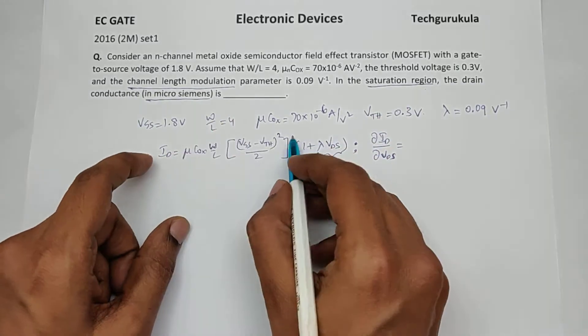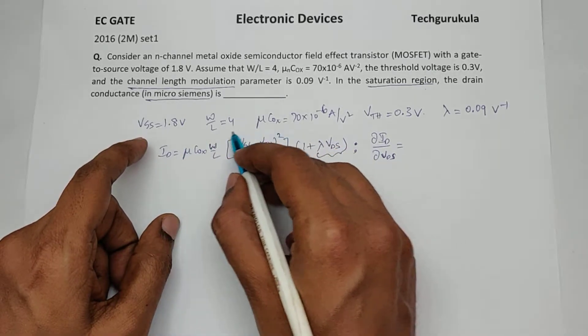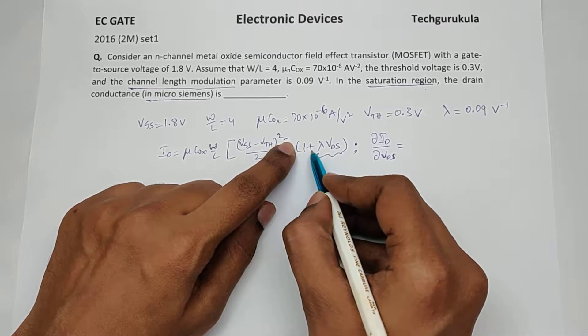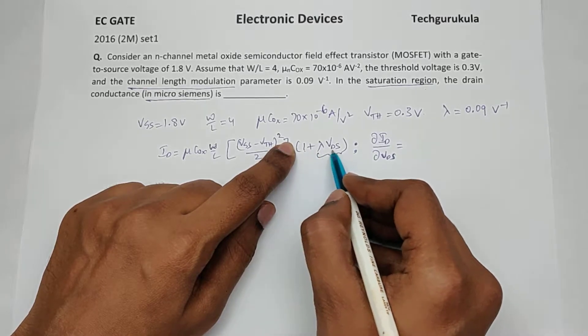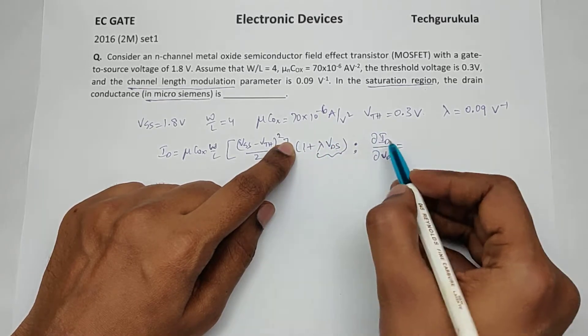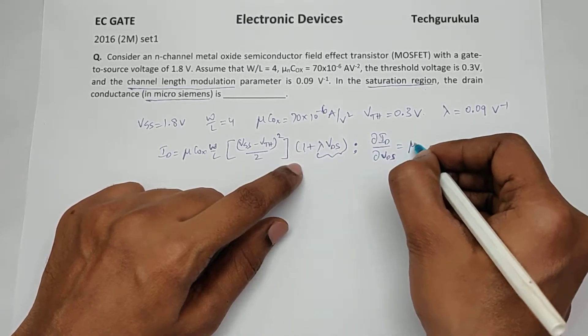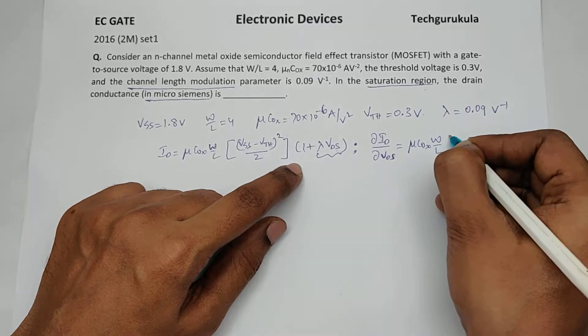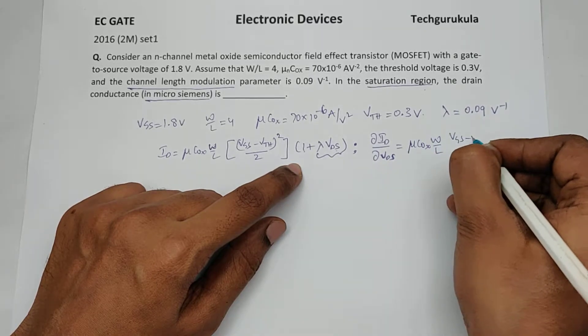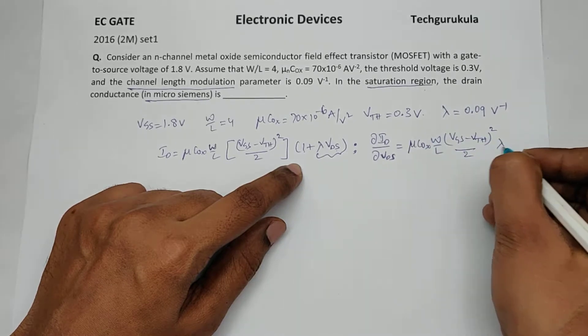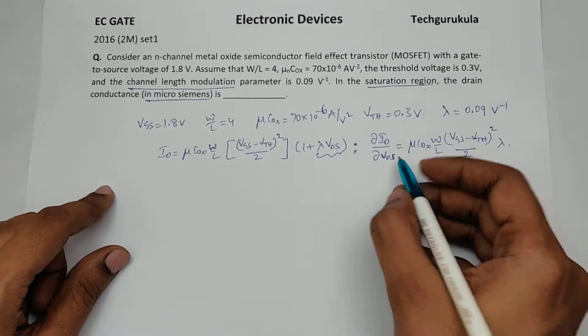So this entire term is not dependent on VDS so this remains exactly there, but when you differentiate this, this is 0. Plus when you differentiate del by del VDS of VDS is 1, so you get lambda. So this is mu C ox W by L times VGS minus VTH whole square over 2 times lambda.